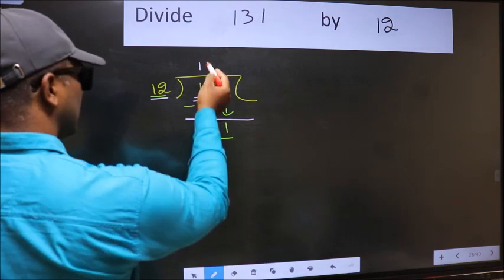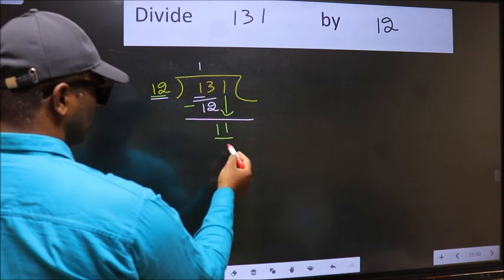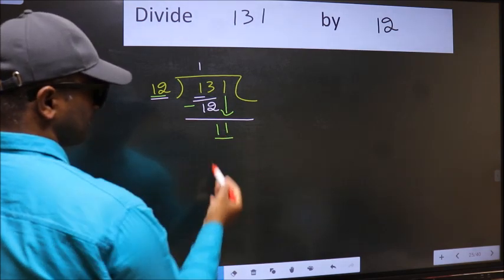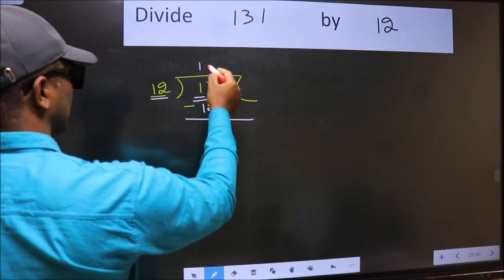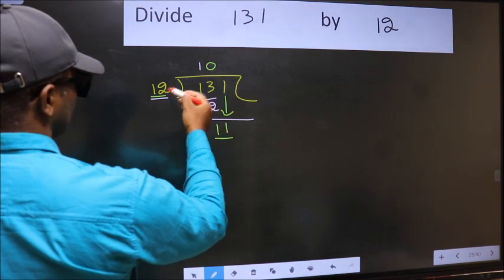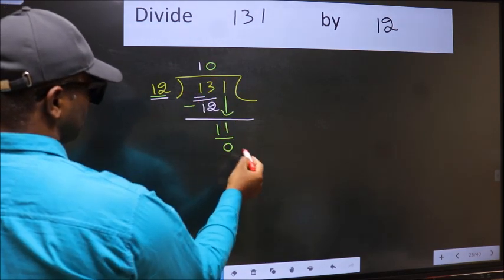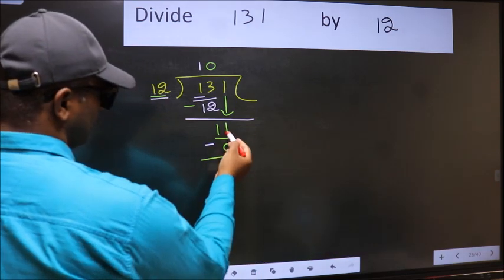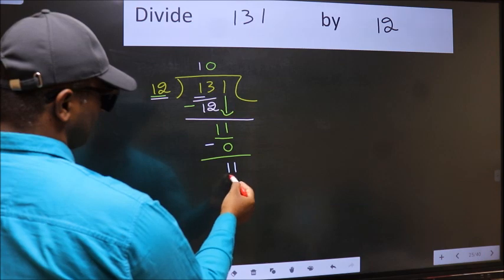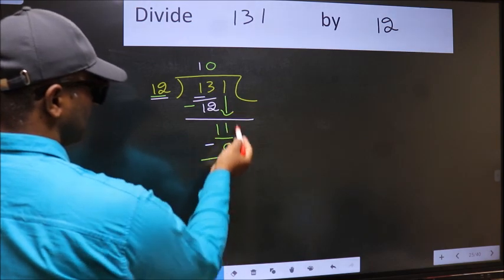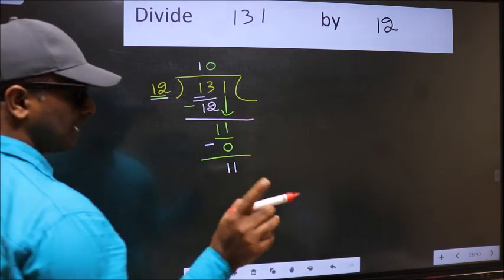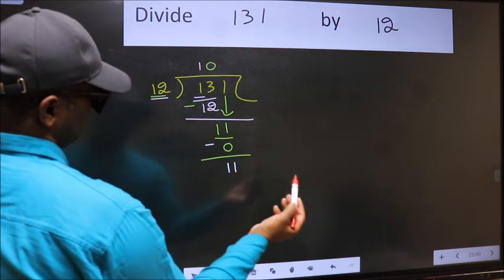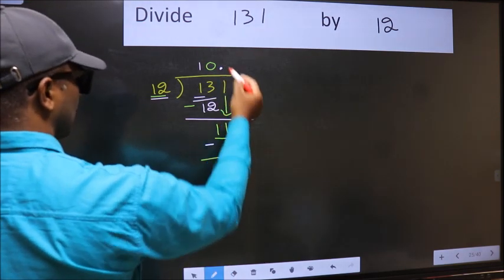If I take 1, we get 12, but 12 is larger than 11. So what we should do is take 0 — 12 into 0 is 0. Now subtract: 11 minus 0 equals 11. We did not bring any number down, and since 11 is smaller than 12, now you can put the dot and take 0.